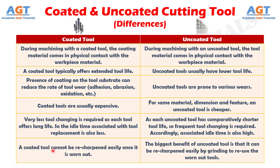Number 6. A coated tool cannot be resharpened easily once it is worn out, whereas the biggest benefit of an uncoated tool is that it can be resharpened easily by grinding to reuse the worn out tools.